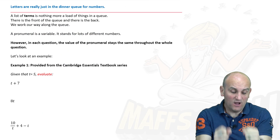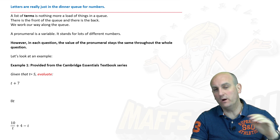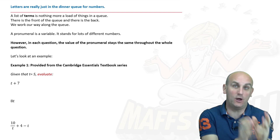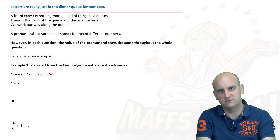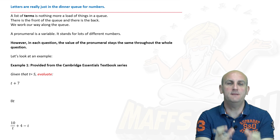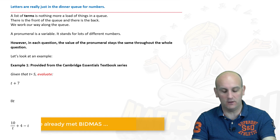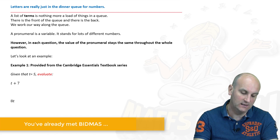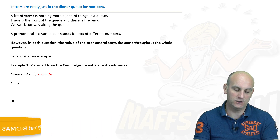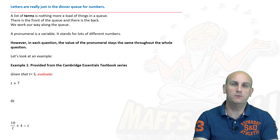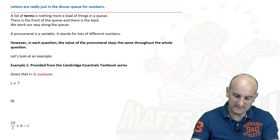Letters are just in the dinner queue for numbers. When you are in that queue, you're going to get served, and in mathematics order is really, really important. A list of terms is nothing more than a load of things in a queue. A pronumeral is a variable — let's have a look at this.